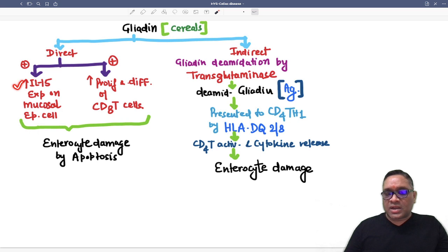Second, they will induce more proliferation and differentiation of cytotoxic CD8 T cells. So increased interleukin-15 and increased CD8 T cells will cause enterocyte damage by what method? By apoptosis. This is the direct method.